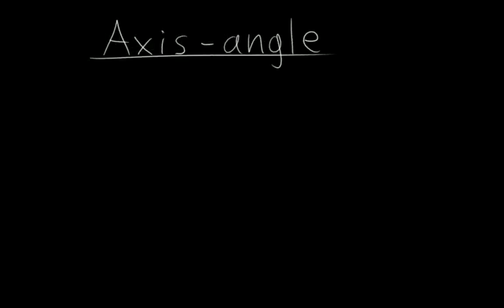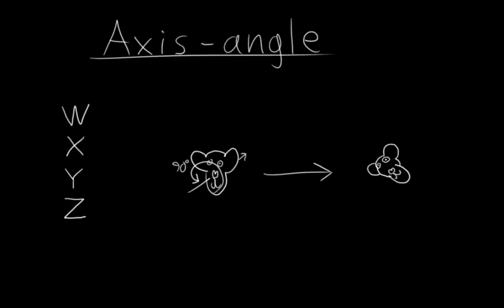So, axis-angle rotations. You have an object, you specify an axis to rotate around and an amount to rotate around it, and bam, it's rotated. Holy crap is that simple! It takes four numbers—three for the axis and one for the angle—and it couldn't be conceptually simpler.